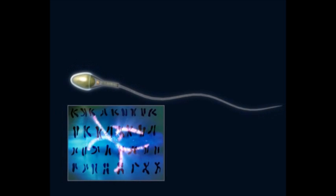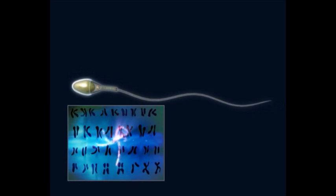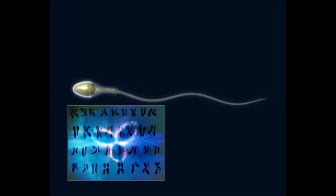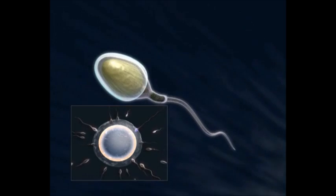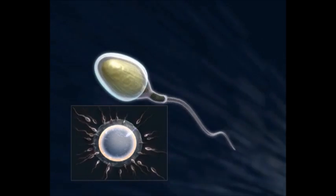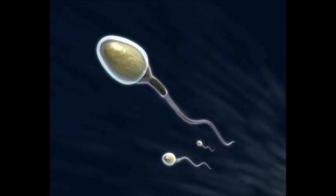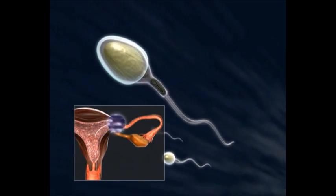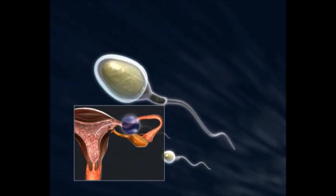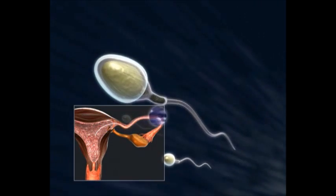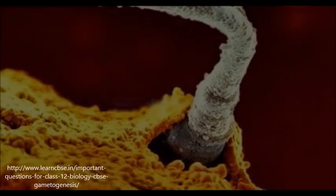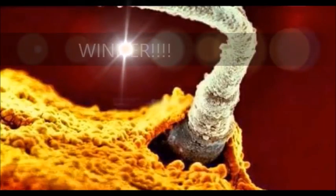The primary function of the sperm is to transport 23 chromosomes to the ovum which contains another 23 chromosomes. Male ejaculate contains about a quarter billion sperm and they are transported via a fluid called semen. After ejaculation, the sperm propel themselves from the cervix through the uterus to the fallopian tube where the egg will be fertilized. Only one sperm will penetrate and the rest will die within the female body after a few days.